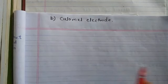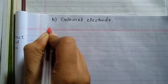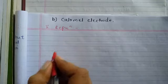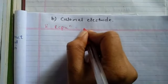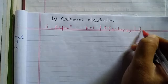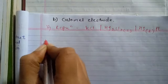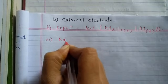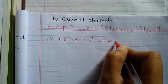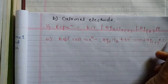The second type of metal insoluble salt electrode is the calomel electrode. Its representation is: KCl | Hg₂Cl₂ (solid) | Hg (liquid) | Pt. The half-cell reduction reaction is: Hg₂Cl₂ (solid) + 2e⁻ → 2Hg (liquid) + 2Cl⁻.